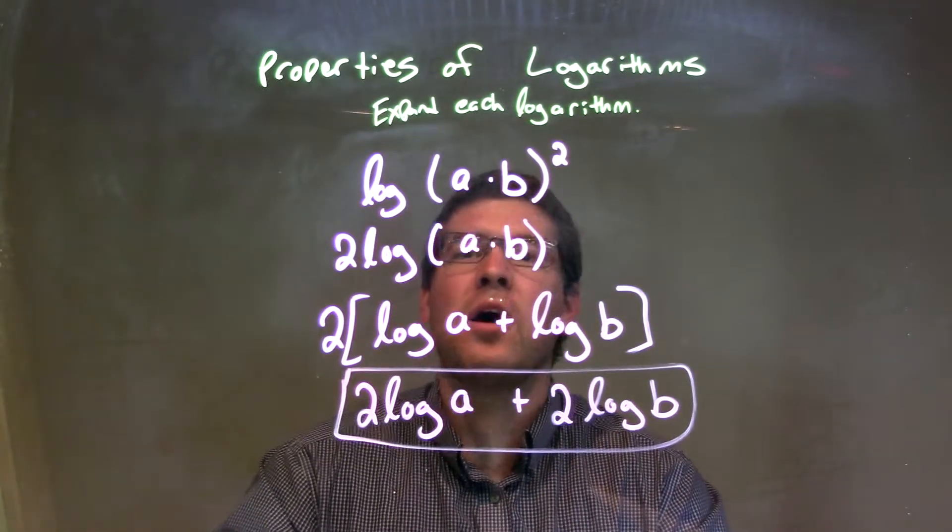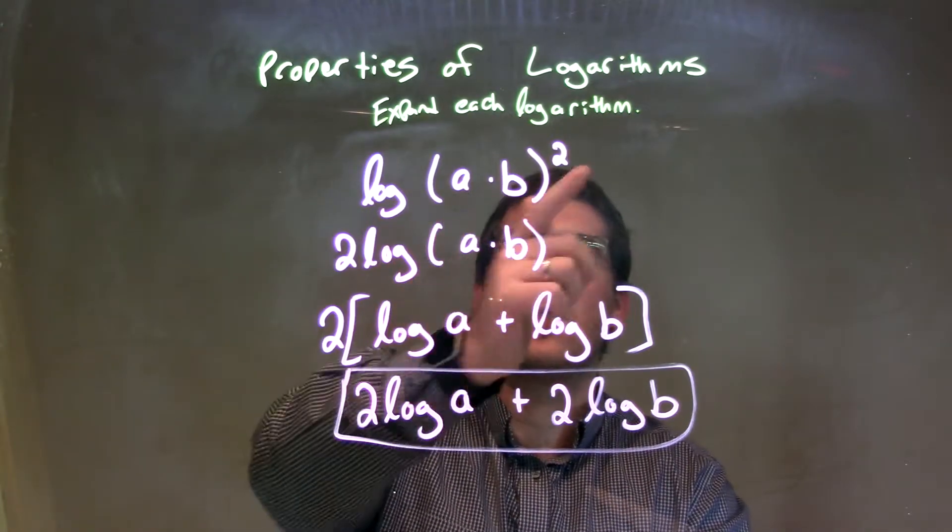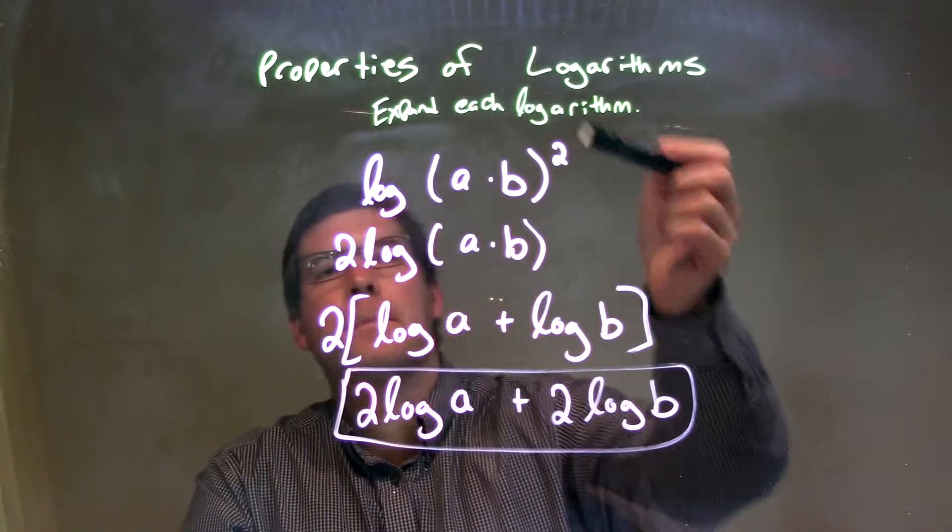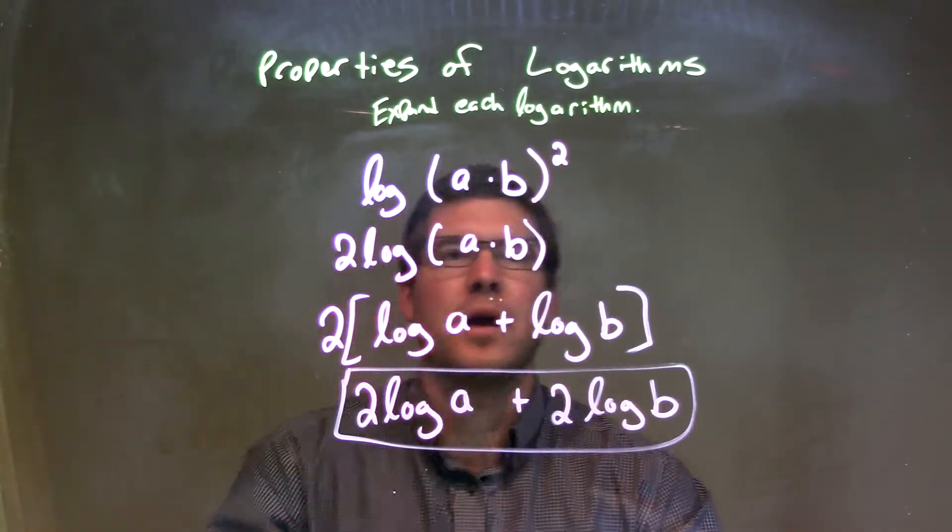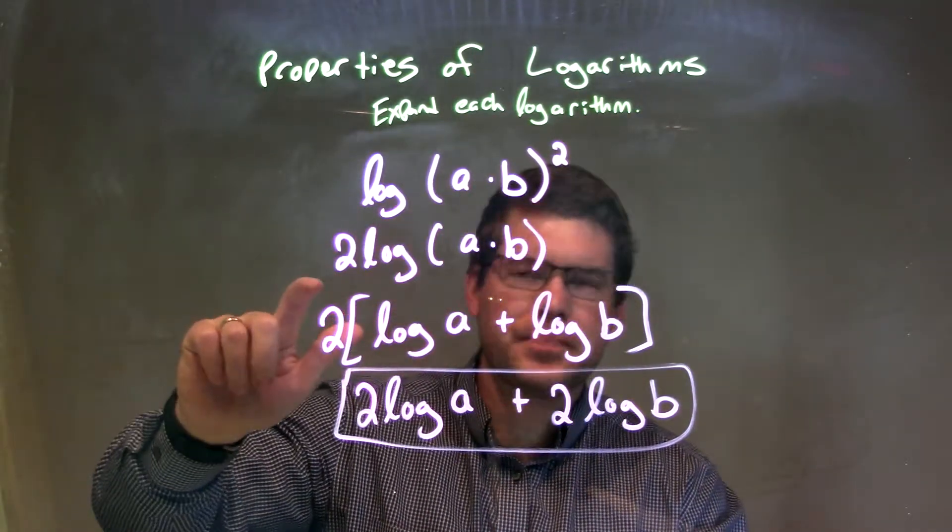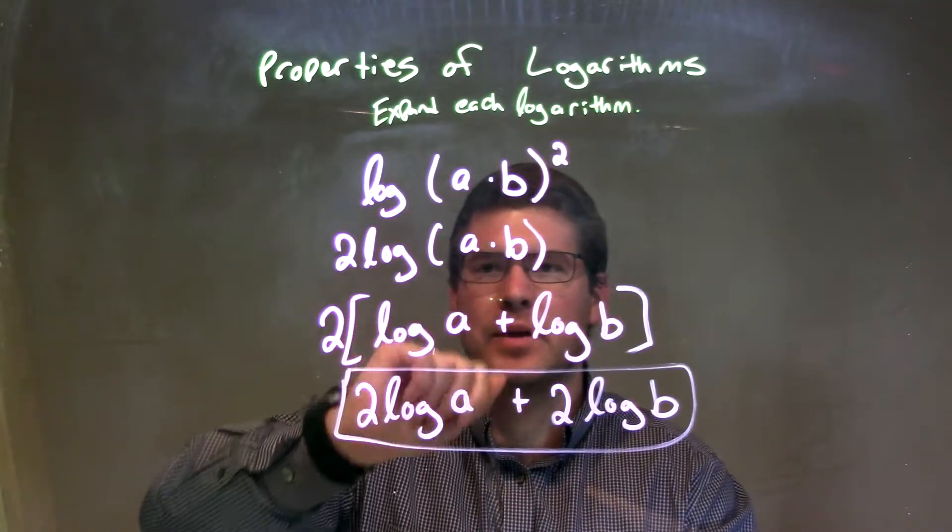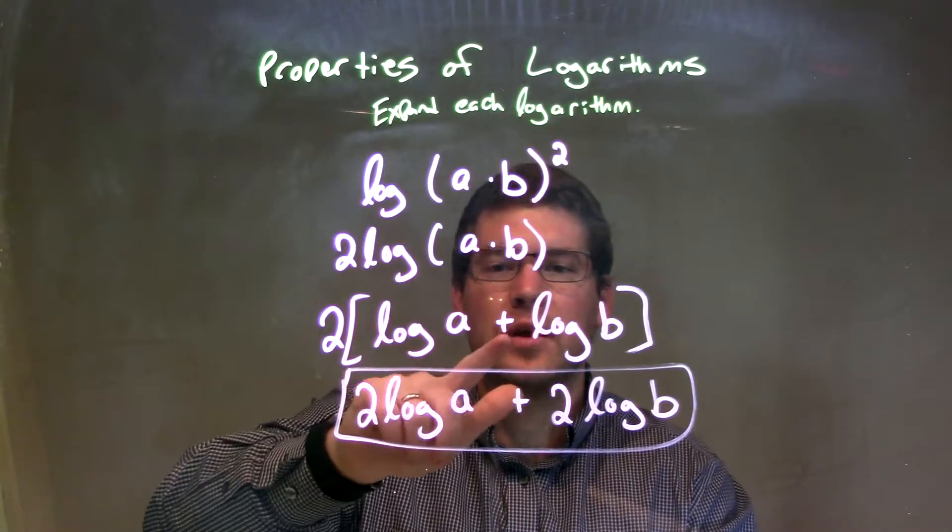So let's recap. We're given log of a times b all to the second power. Well, that exponent we can bring down out front when we expand. Then we're given a times b in the middle of that log. Well, that can be separated to an addition, so that's the same thing as log of a plus log of b.